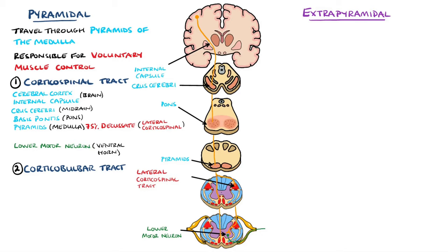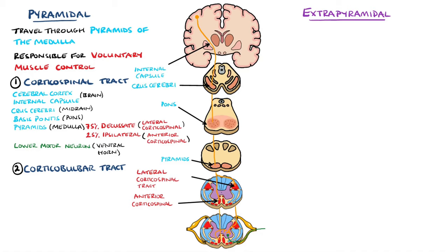The other 25% of the fibres that remain on the ipsilateral side will continue as the anterior corticospinal tract, and they will continue down ipsilaterally until the cervical and higher thoracic levels, where they will decussate and synapse with their motor neurons.